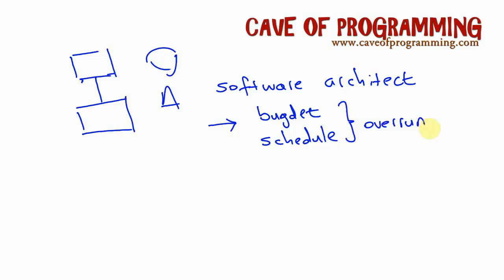For a long time it was absolutely the normal case, and to some extent it still is, that any piece of software would overrun its schedule and its budget, which is terrible. Another flaw with this approach is that it takes a lot of the creativity out of writing software. Software developers see their work as fundamentally creative in nature — many of them do. They like the process of thinking about how the software will be designed and figuring it out as they go along. If they're handed a design effectively by management, it's no fun for them implementing it. Even if it's their own design, a lot of the time it takes the fun out of actually implementing it.